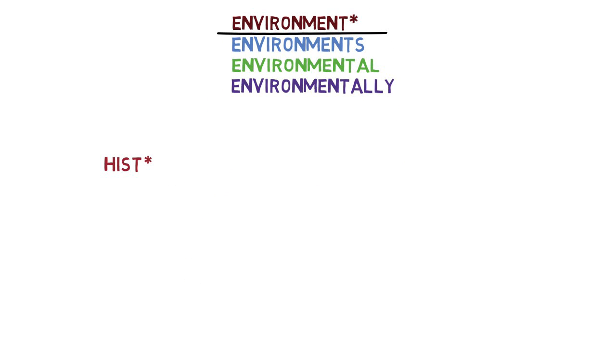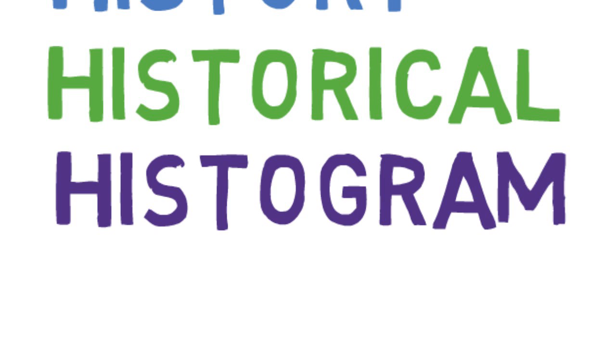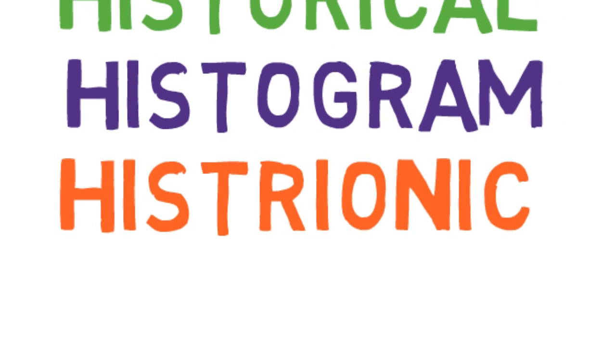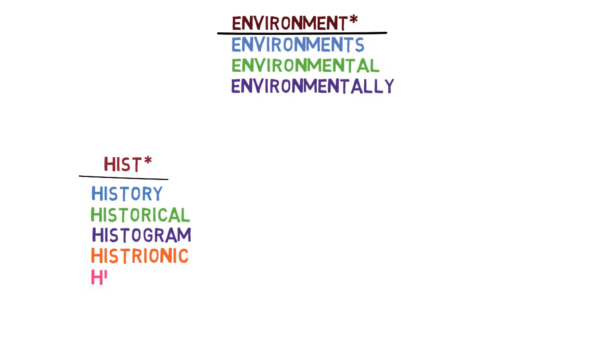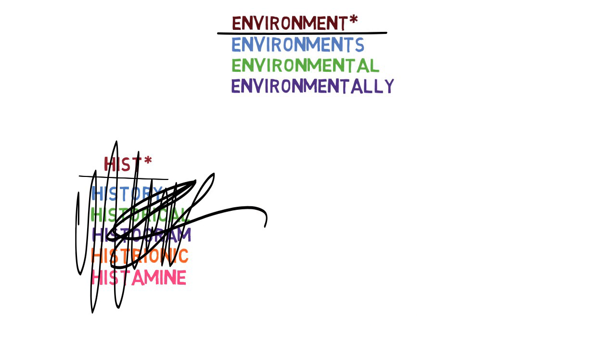Be smart about your truncation. If you truncate after the wrong letter, such as 'hist*,' not only will you retrieve 'history' and 'historical,' but also 'histogram,' 'histrionic,' and 'histamine.' If you only want information related to history, you would add your wildcard after the R.